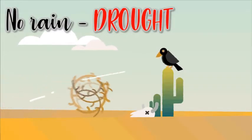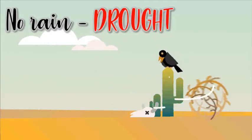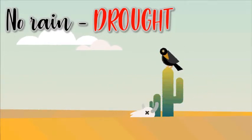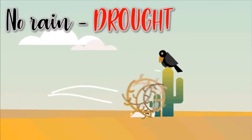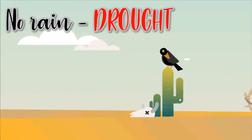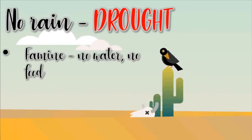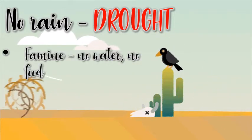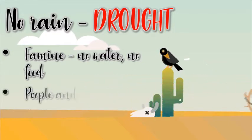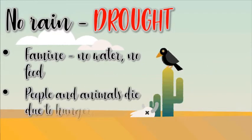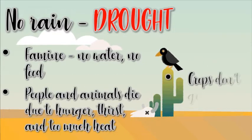Also, climate can get too dry and bring no rain for months. This causes droughts. No water is available for growing crops. People, plants, and animals die because there is no water or food.